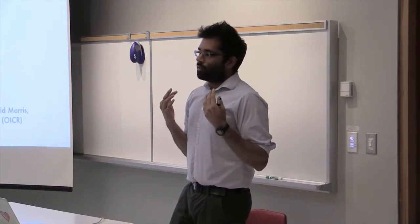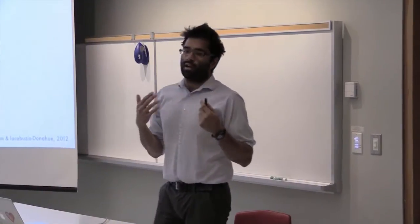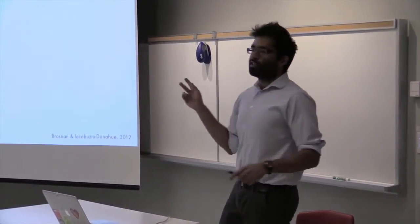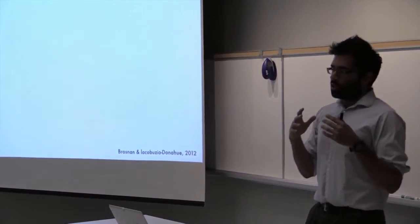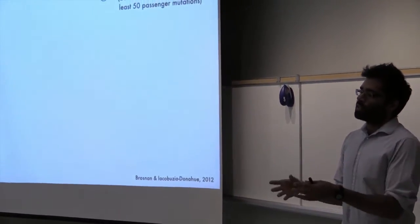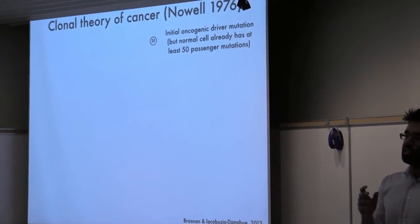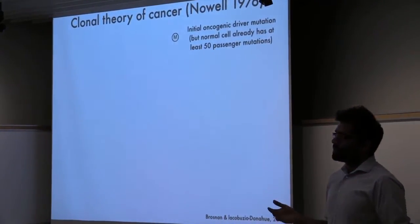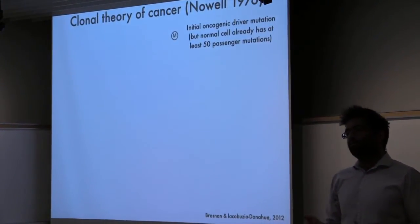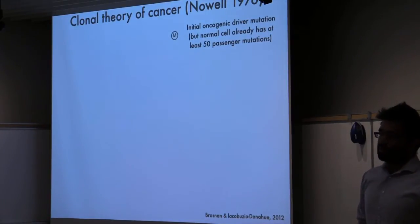But when a driver mutation hits that starts the process of tumor development and progression — here shown as M in the diagram — the implication is that not only are there lots of cells with that driver mutation, but all those cells also contain those private mutations that the founding cell had when the driver mutation happened. This process of accumulating passenger mutations, followed by a driver mutation that causes an expansion in both the driver and passenger mutations, often happens more than once in tumor development.